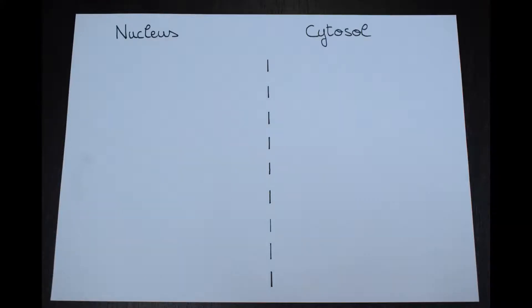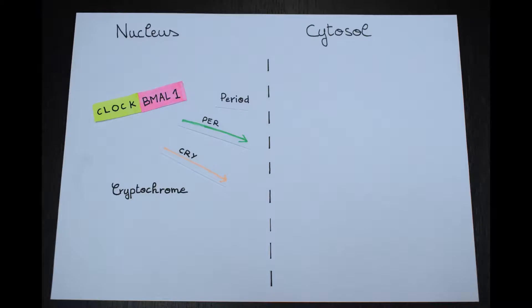But what happens during this 24-hour cycle? In the mammalian circadian clock, the transcription factor called CLOCK dimerizes with another transcription factor called BMAL1. The CLOCK-BMAL1 dimer promotes the transcription of the CRY and PER genes.